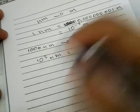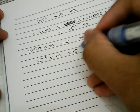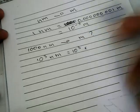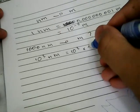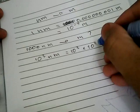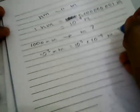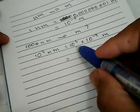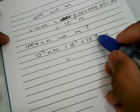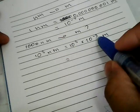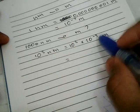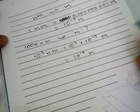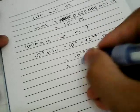We rewrite ten to the power of three and multiply it by ten to the power of minus nine meters. That gives us ten to the power of three plus minus nine, which equals ten to the power of minus six meters.